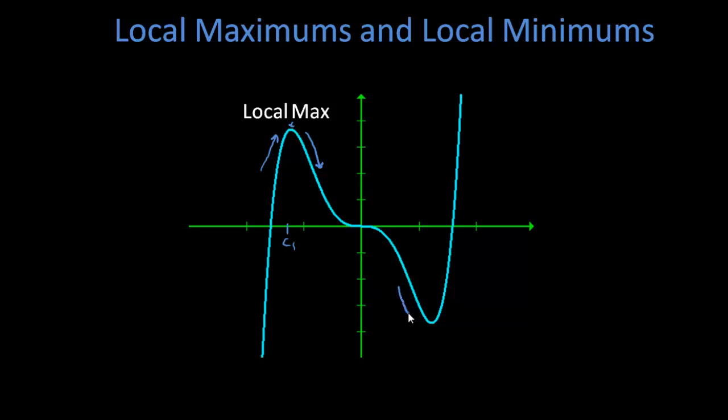Now over here our function is decreasing and then it turns around and begins to increase. That's a local min. Now here you're decreasing, you go to slope of zero and then you decrease again, well that's just nothing. So we don't really care about that one.